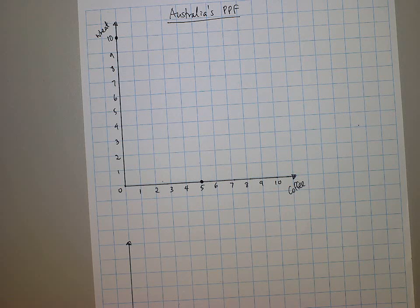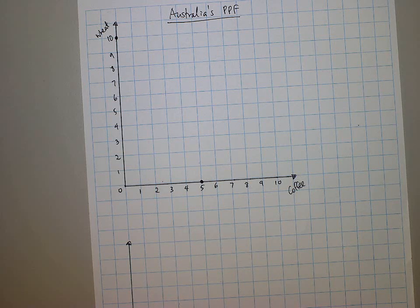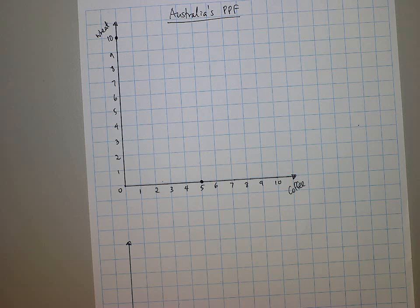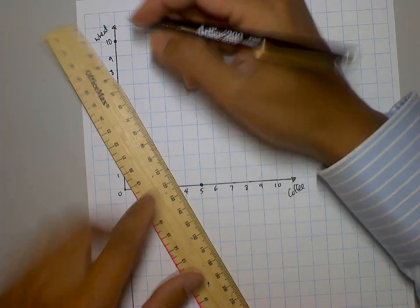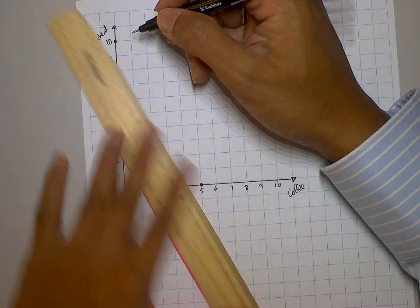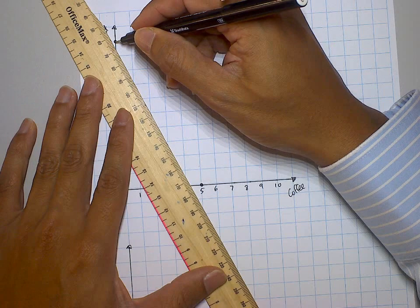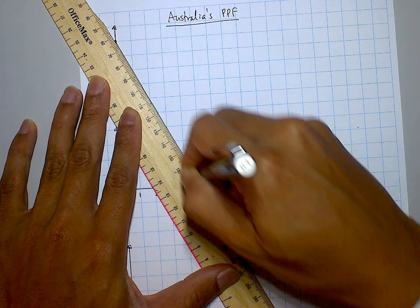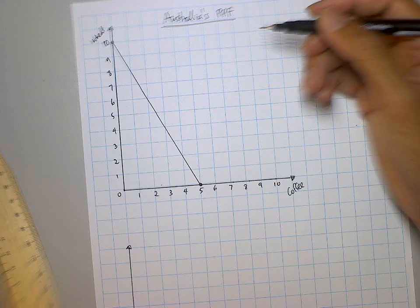The vast majority of questions assume the PPF is straight. You might have learned about bowed PPFs in Year 11, but I haven't seen a bowed PPF in an exam question just yet. So you can assume, if not told otherwise, that the PPF is straight. Just draw a straight line between these two dots and you've got Australia's PPF.